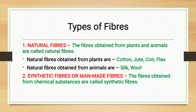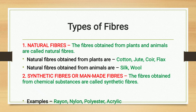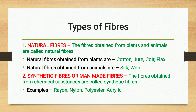Examples of natural fibers obtained from animals are silk and wool. The second type of fibers are synthetic fibers, or man-made fibers. The fibers obtained from chemical substances are called synthetic fibers. Examples include rayon, nylon, polyester, and acrylic. In this video, we will discuss the natural fibers obtained from plants — that is, cotton and jute.